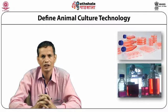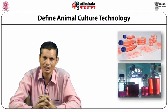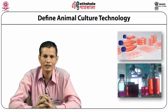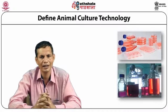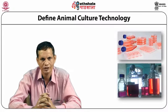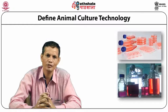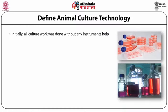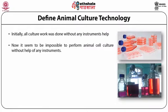We are also going to discuss the history of animal cell culture. Historically, Dr. Harrison was the first person responsible for maintaining animal cell culture in 1907, while Ross was another scientist who was able to maintain embryonic chick cells in 1885. Initially all culture work was done without any instrument, but now it seems impossible to perform animal cell culture without instruments — they are the main backbone of this technology.